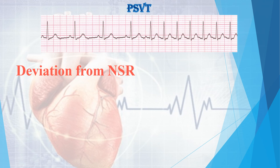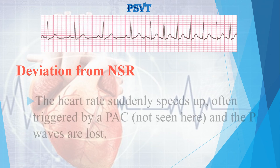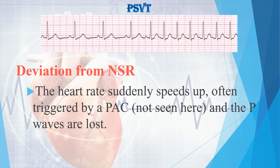In Paroxysmal Supraventricular Tachycardia, the ECG shows deviation from normal sinus rhythm — the heart rate suddenly speeds up, often triggered by a premature atrial contraction, and P waves are lost.